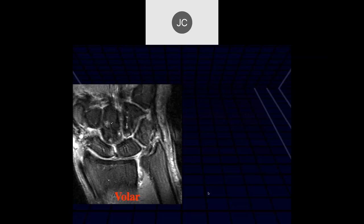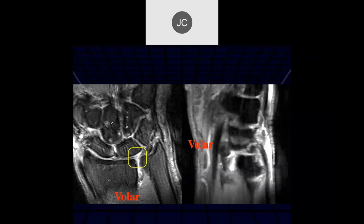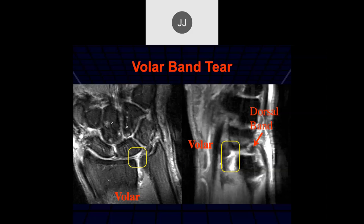Here again it looks like a tear or central perforation of that central disc. This is really going toward the actual insertion of the TFCC on the articular cartilage of the radius. You can see this is a very volar location — dorsal band, volar band — and this was a volar band tear. This is an older person, isn't it? Probably.